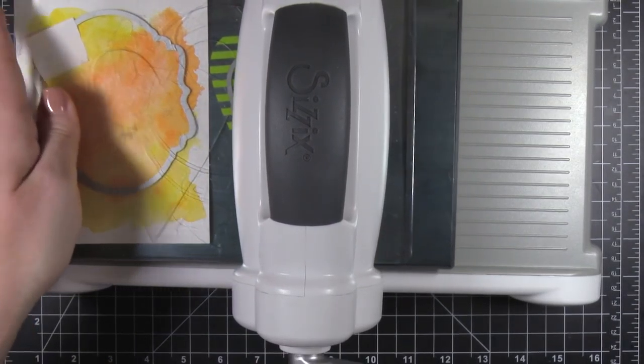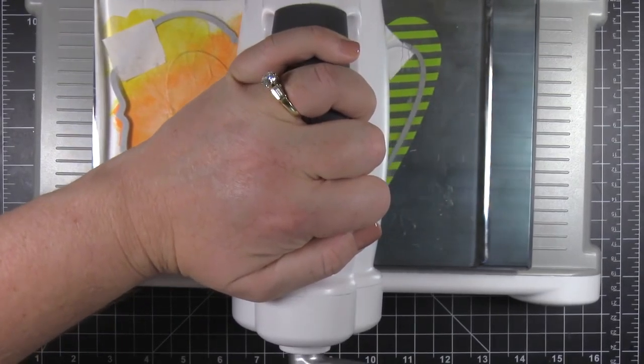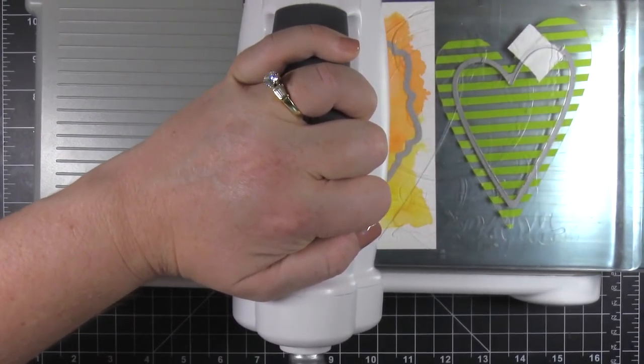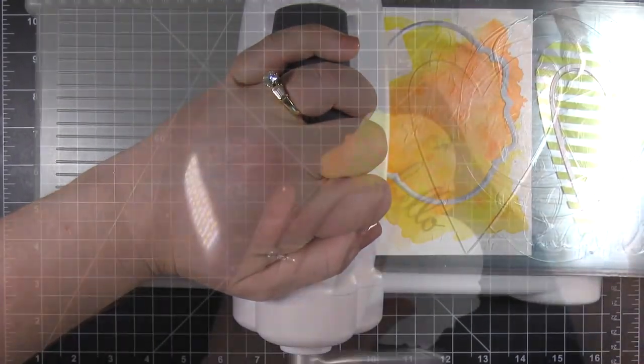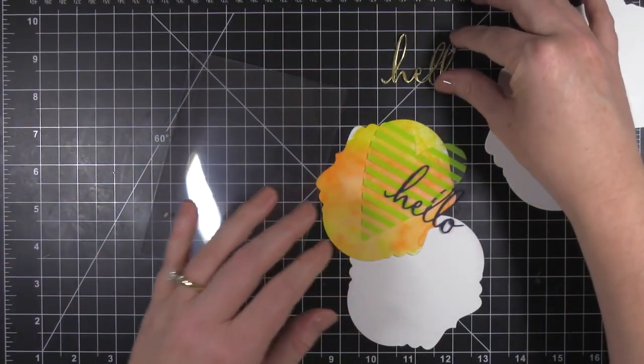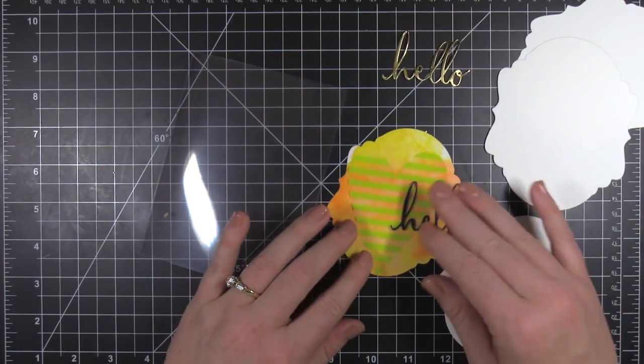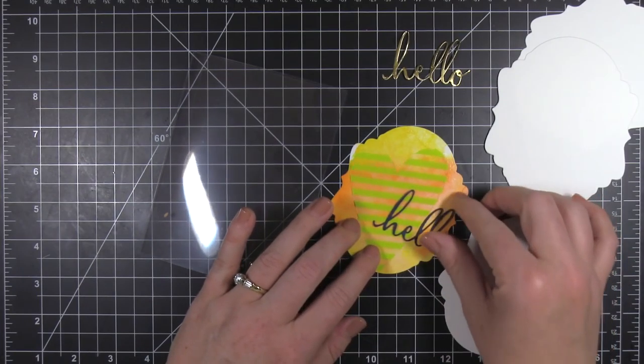Now you're seeing me use the Precision Base Plate here. This Precision Base Plate is great for cutting through things like acetate and glitter cardstock, or for using with those intricate dies like this little Hello. So you can see I've cut out quite a few things here.